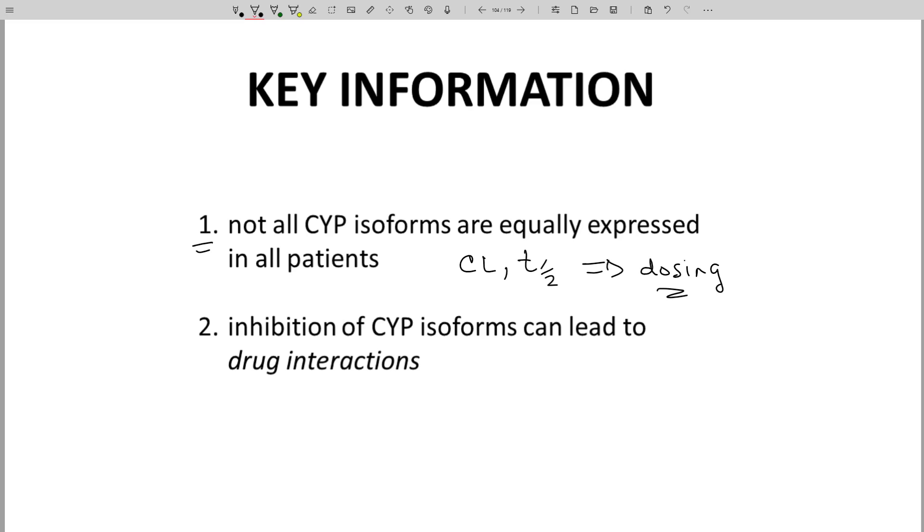Idea number two: if the lead inhibits some CYP isoforms, the lead may inhibit the metabolism of other drugs that a patient may be taking. In other words, by taking your lead as a drug, the clearance and half-life of other drugs may change. That is called a drug interaction or drug-drug interaction or DDI. It is a possible safety risk that needs to be identified early in a program.